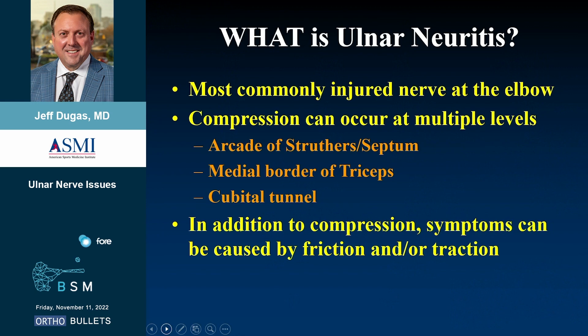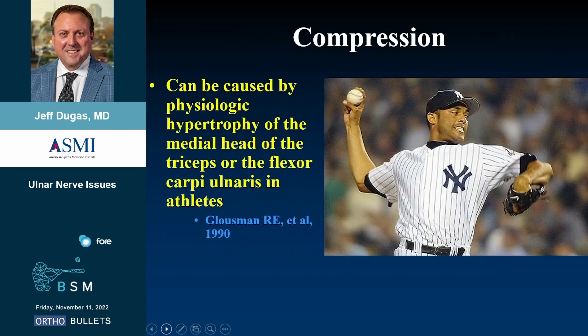What is ulnar neuritis? It is the most commonly injured nerve at the elbow. Compression can occur at multiple levels: the arcade of Struthers, the ligament of Osborne, and the medial border of the triceps. In addition to compression, symptoms can be caused by friction and/or traction.